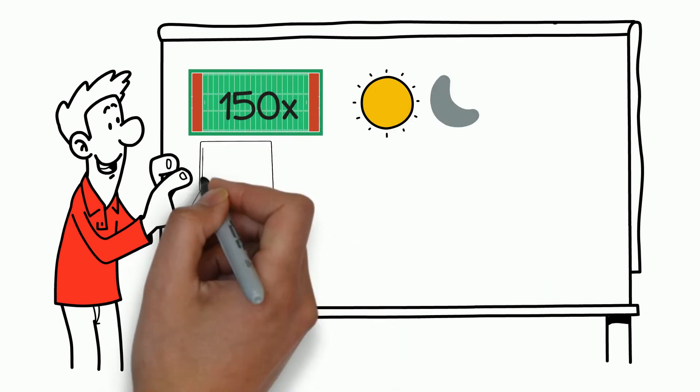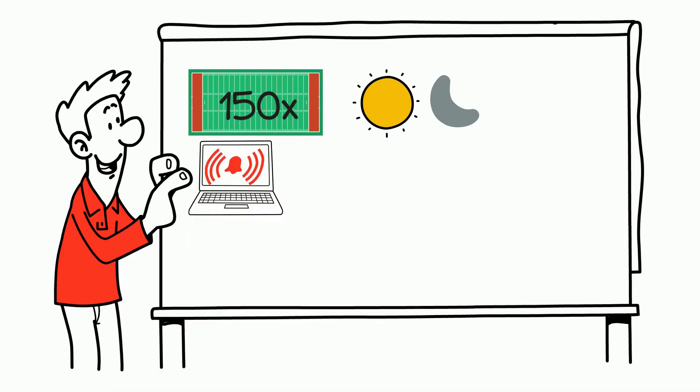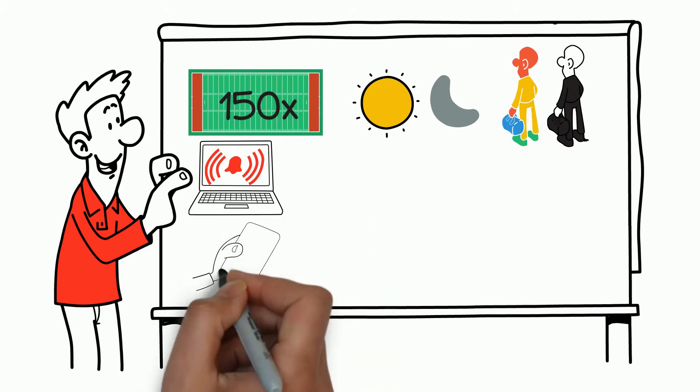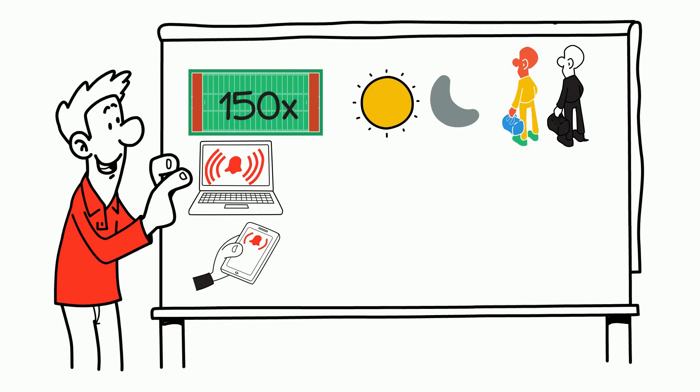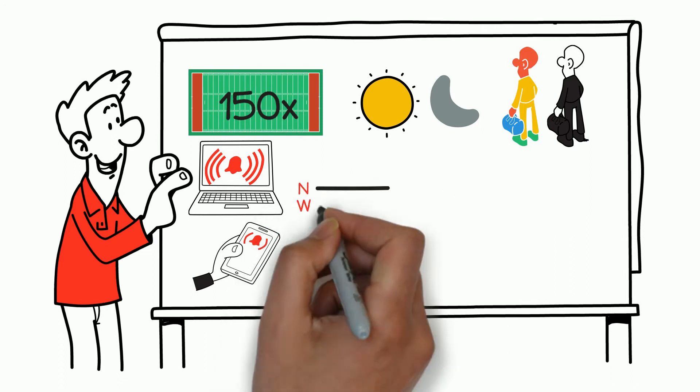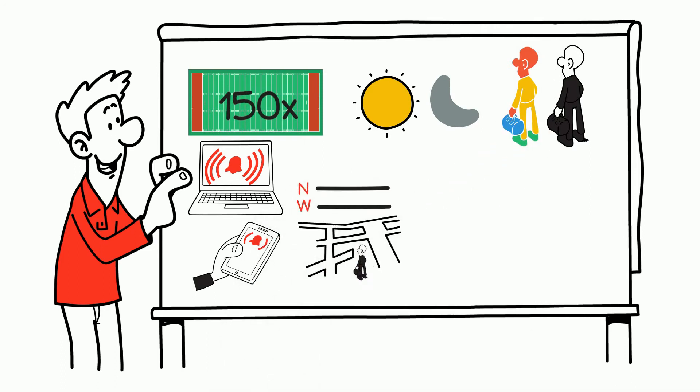It generates real-time intrusion alerts and notifications, provides thermal image reviews and visual surveillance of the threat, allows Mike to have live mobile notifications and viewing from his smartphone, and identifies the GPS location of the intruder on a Google Earth map.